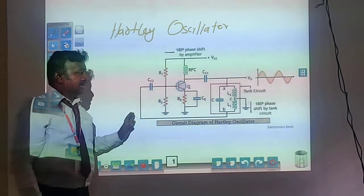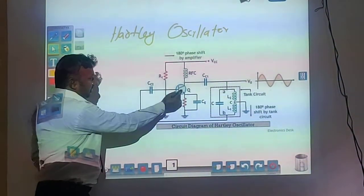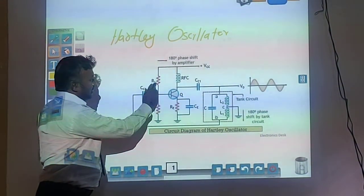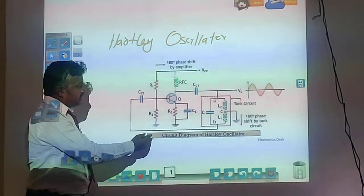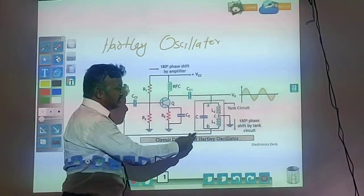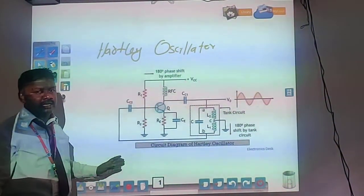This is the Hartley oscillator circuit. It consists of a transistor, a coupling capacitor, a voltage divider, and a tuned circuit. According to the oscillator conditions,